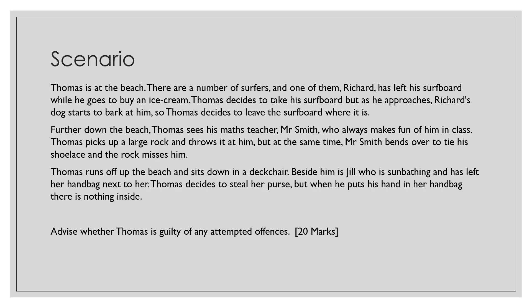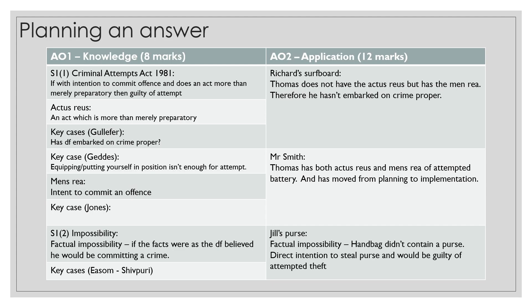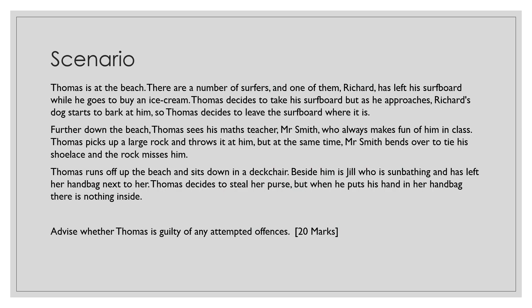For this scenario you obviously need to be familiar with attempted offences. To plan your answer, split it into AO1 and AO2, with enough points for AO1 to get 8 marks. First, define and describe the Criminal Attempts Act, then describe the actus reus of an attempt. To further define the actus reus you can use the case of Gullefer — has the defendant embarked on the crime proper? Then apply all of this to Thomas's attempt to steal Richard's surfboard, referring back to the question: has he committed any attempted offences?